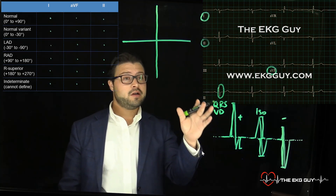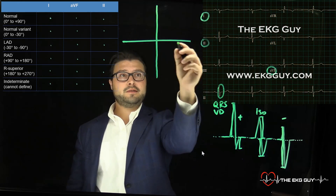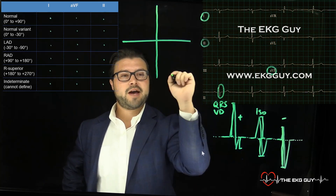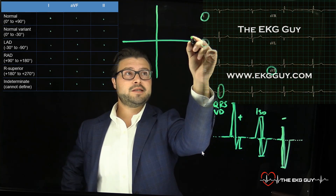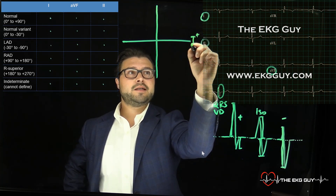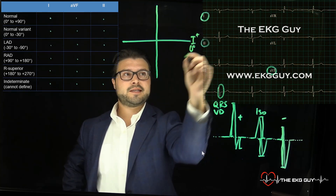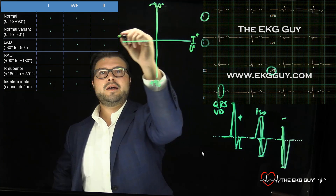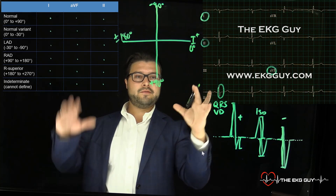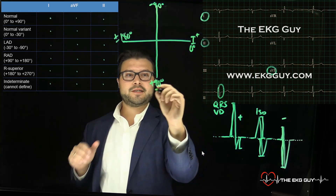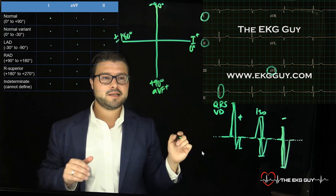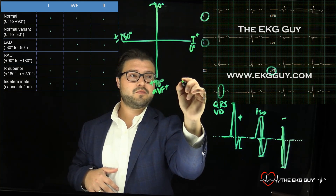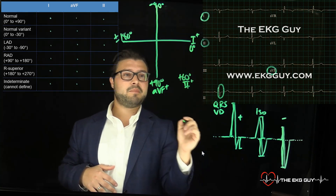Now let's draw out this cross — our quadrant system. This is the easiest way to learn it when you're beginning. We want to add our leads — the ones we're focused on. Lead I: the positive end sits at zero degrees. Positive 90 degrees is down here, negative 90 degrees goes in the opposite direction, and plus or minus 180 degrees is here. AVF's positive end sits at positive 90 degrees. Lead II sits at positive 60 degrees — these are the positive ends of those leads.